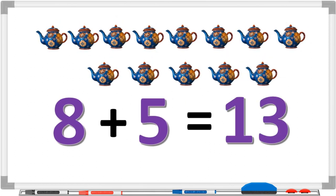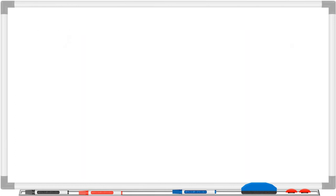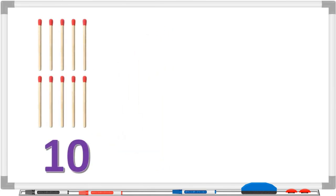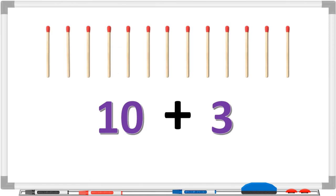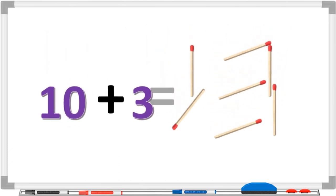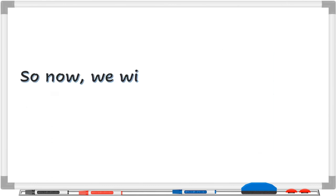So eight plus five is equal to thirteen. Correct! Let's learn one last addition. If we add ten matchsticks with three matchsticks, we will have: one, two, three, four, five, six, seven, eight, nine, ten, eleven, twelve, thirteen. So ten plus three is equal to thirteen. Correct!